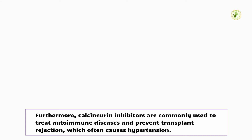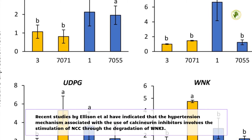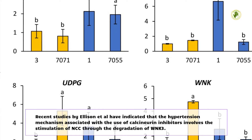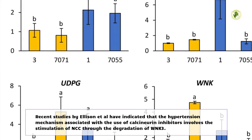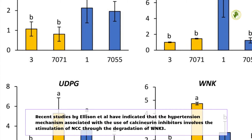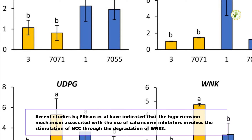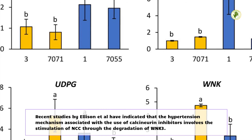Calcineurin inhibitors are commonly used to treat autoimmune diseases and prevent transplant rejection, and often cause hypertension. Recent studies by Ellison et al. have indicated that the hypertension mechanism associated with calcineurin inhibitor use involves stimulation of NCC through the degradation of WNK3.